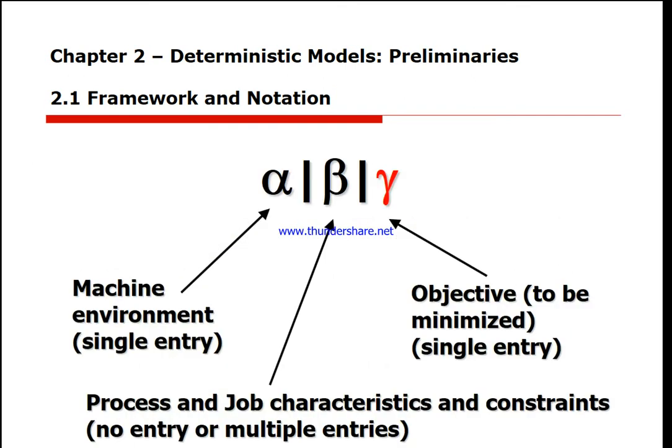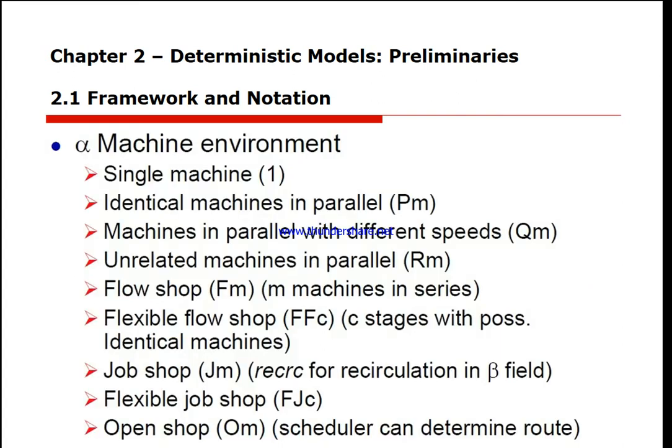We're going to define three parameters that are extremely important: alpha (α), beta (β), and gamma (γ). Alpha defines the machine environment, beta defines job characteristics, and gamma is the objective we are working on — usually to minimize a certain value.